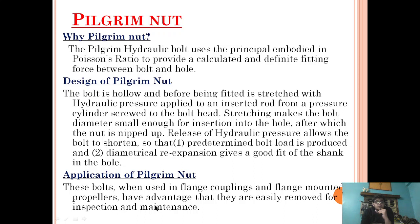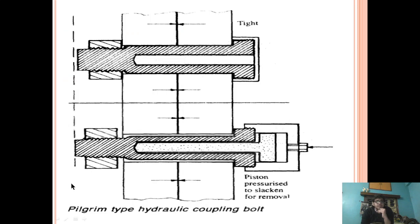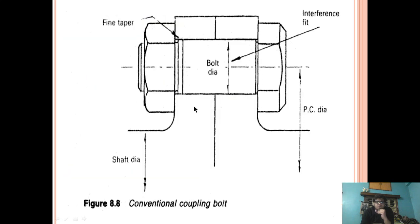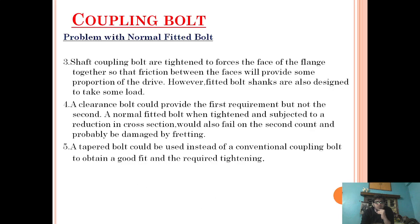With the pilgrim nut design, bolts used in flange couplings and flange-mounted propellers have the advantage that they can be easily removed for inspection and maintenance. This design helps us overcome three problems: first, it does not involve cooling; second, the bolt is not over-stretched; and third, it does not have any fitting problem because it achieves a good interference fit. In summary, this hollow bolt is jacked hydraulically, reducing the cross-sectional area so it slides in easily, and upon pressure release a good interference fit is obtained.